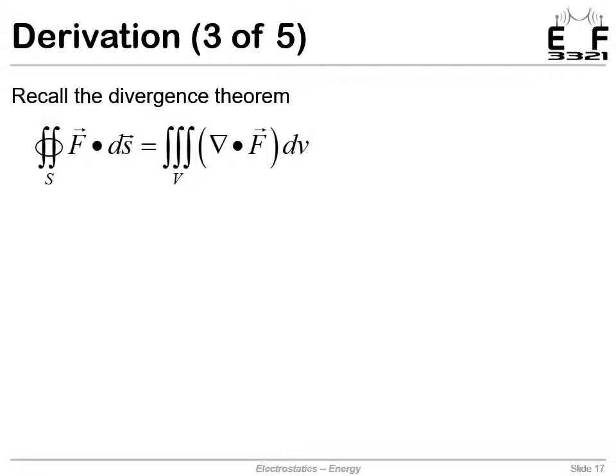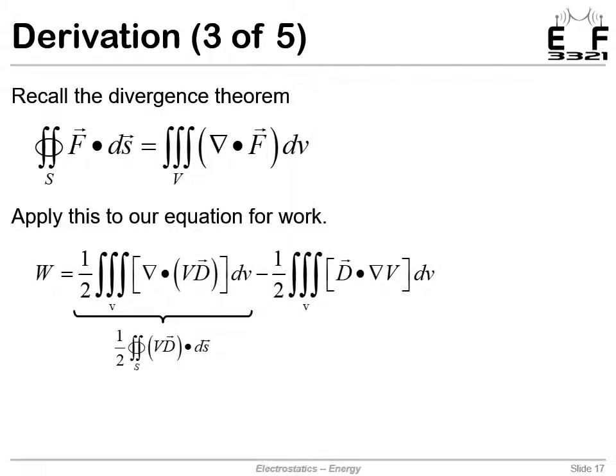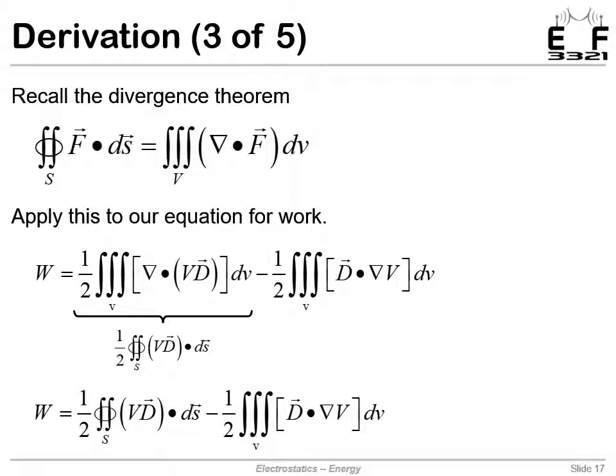Remember the divergence theorem? This let us convert a surface integral to a volume integral. If we have a surface integral of flux, that's equivalent to a volume integral of divergence. In our first integral, we actually have a volume integral of divergence. That lets us write this as a surface integral of flux over a closed contour surface, completely enclosing some volume. We replace that triple integral with our double integral, the closed contour surface integral.